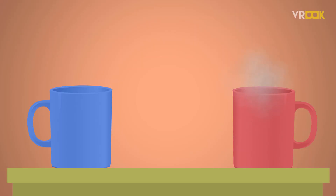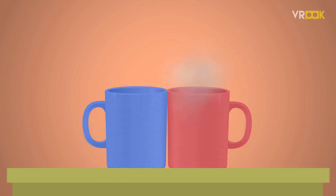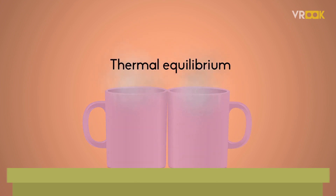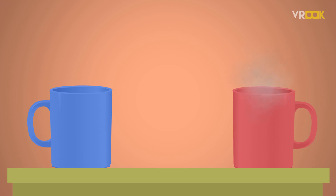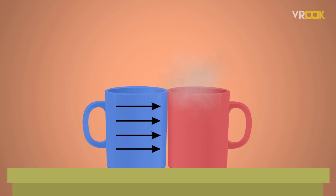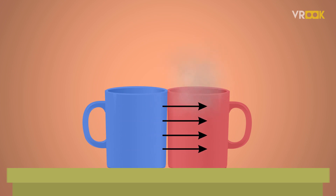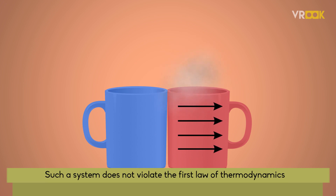We can imagine thermodynamic processes which conserve energy but never occur in nature. For example, if we bring a hot object into contact with a cold object, we observe that the hot object cools down and the cold object heats up until an equilibrium is reached. The transfer of heat spontaneously takes place from the hot object to the cold object. We can imagine a system, however, in which heat is instead transferred from the cold object to the hot object — and such a system does not violate the first law of thermodynamics.